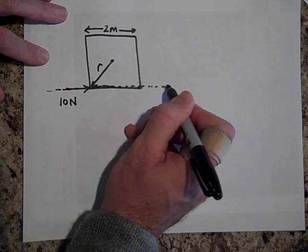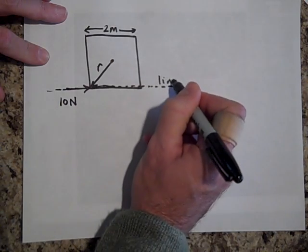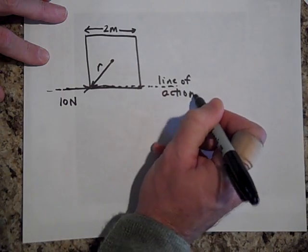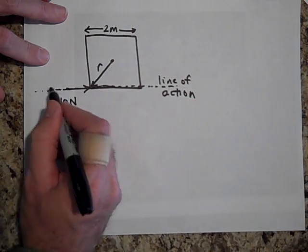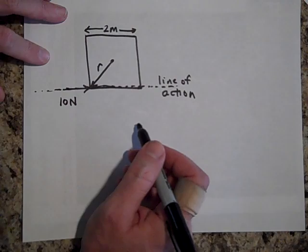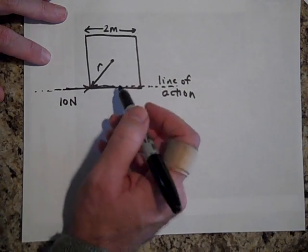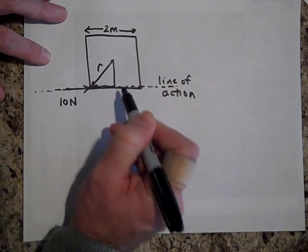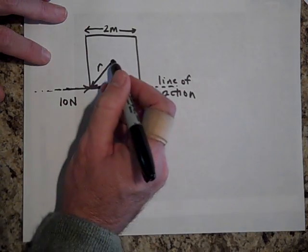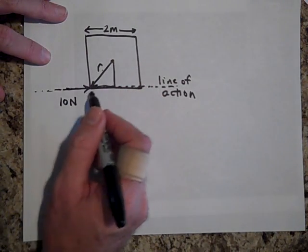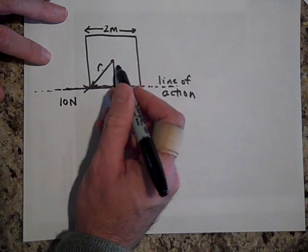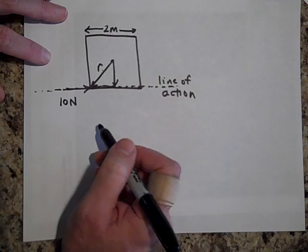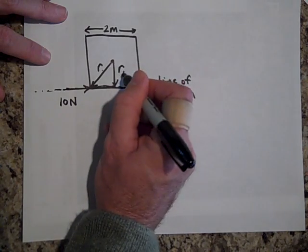This line right here I'm drawing is called the line of action of the force. The line of action. It's just the line that the force acts in. If you were to draw a line that was perpendicular to that, to the axis, this is the part of R that's perpendicular to F. Do you see how this is the part of R that's perpendicular to F? So that's R perpendicular.